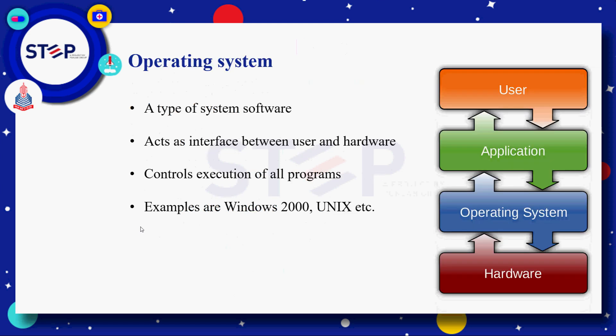Operating system — operating system is basically a type of system software جو کہ user اور hardware کے درمیان as an interface کے طور پر کام کرتا ہے.